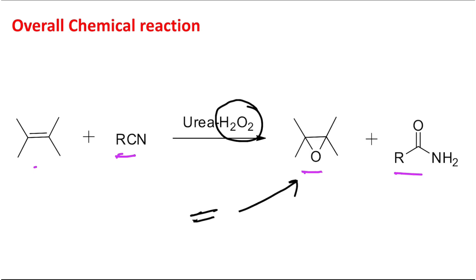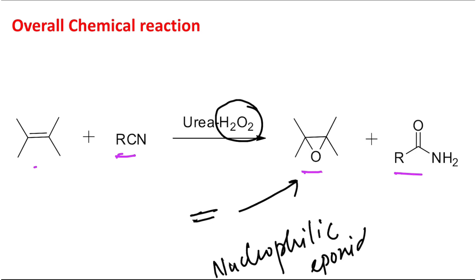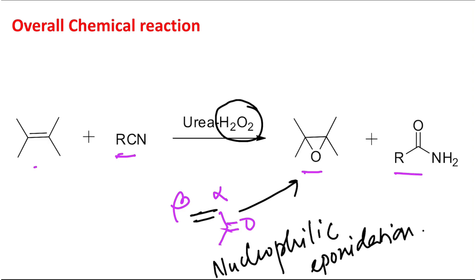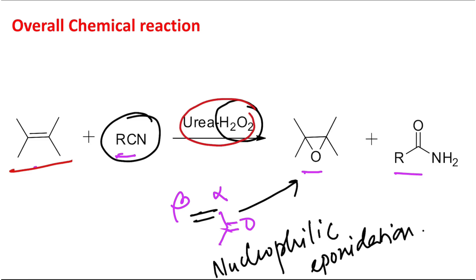Hydrogen peroxide can do nucleophilic epoxidation — I have a dedicated lecture on this you may visit. Nucleophilic epoxidation means it cannot directly oxidize a simple alkene, but it can if the alkene is attached to an electron-withdrawing group like a carbonyl (alpha-beta unsaturated carbonyl). But here I have taken a simple alkene, so how is this reaction happening?